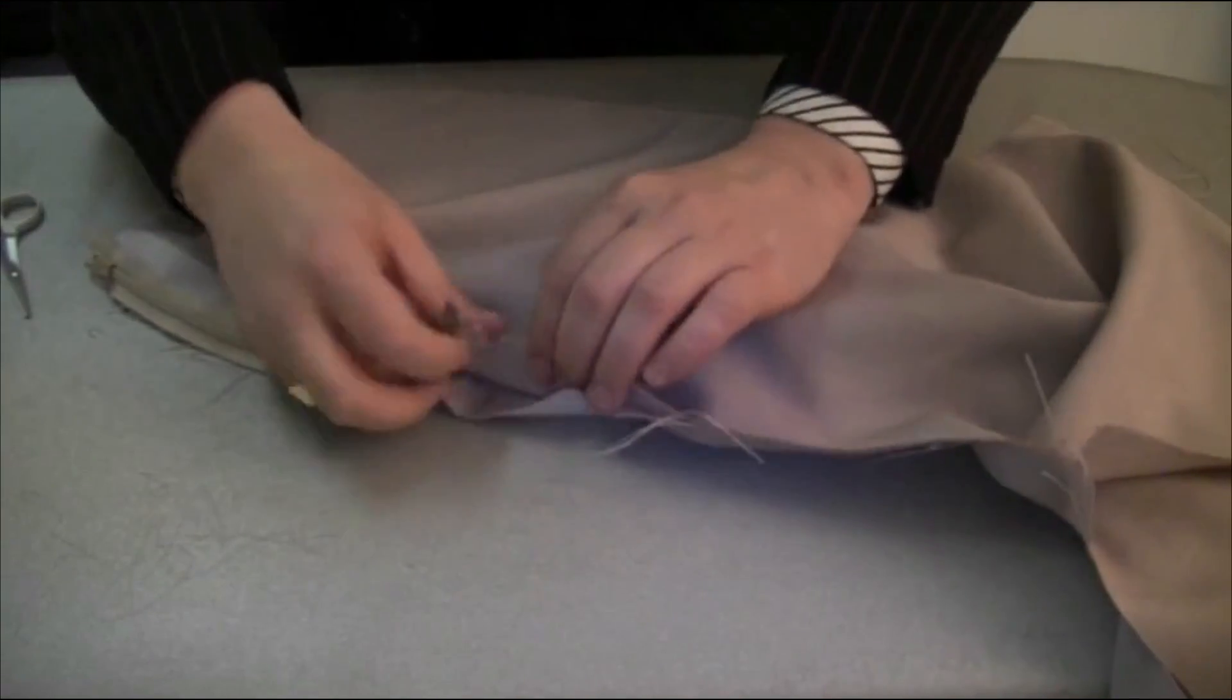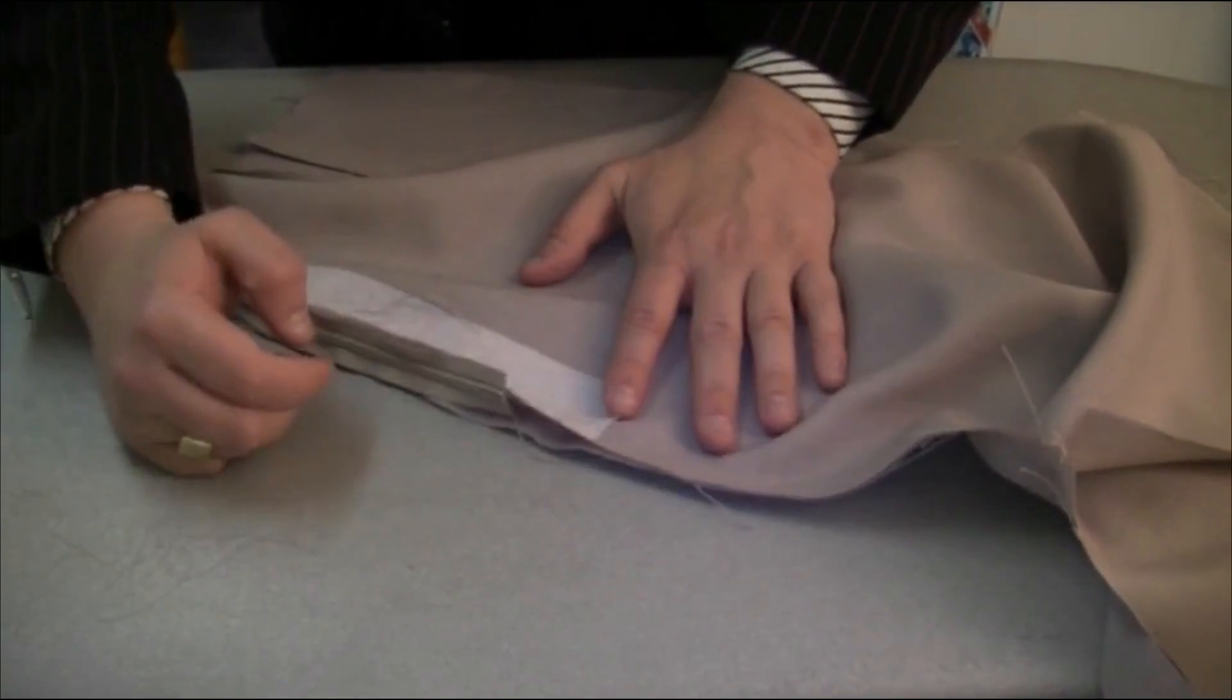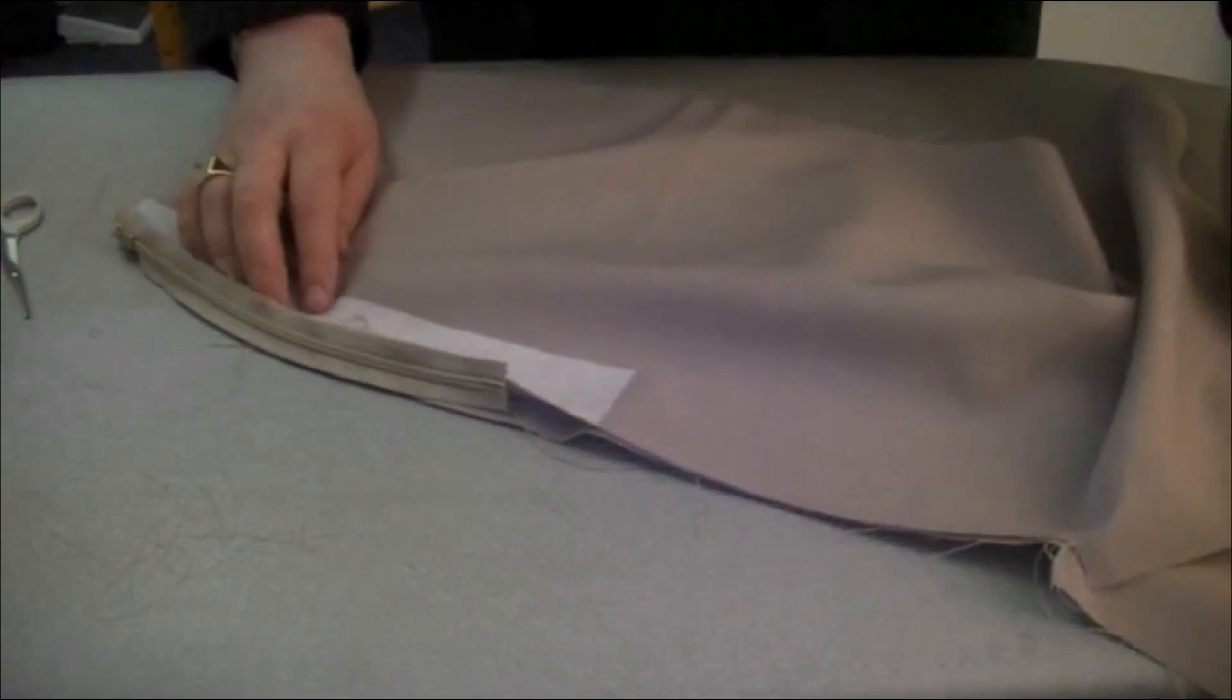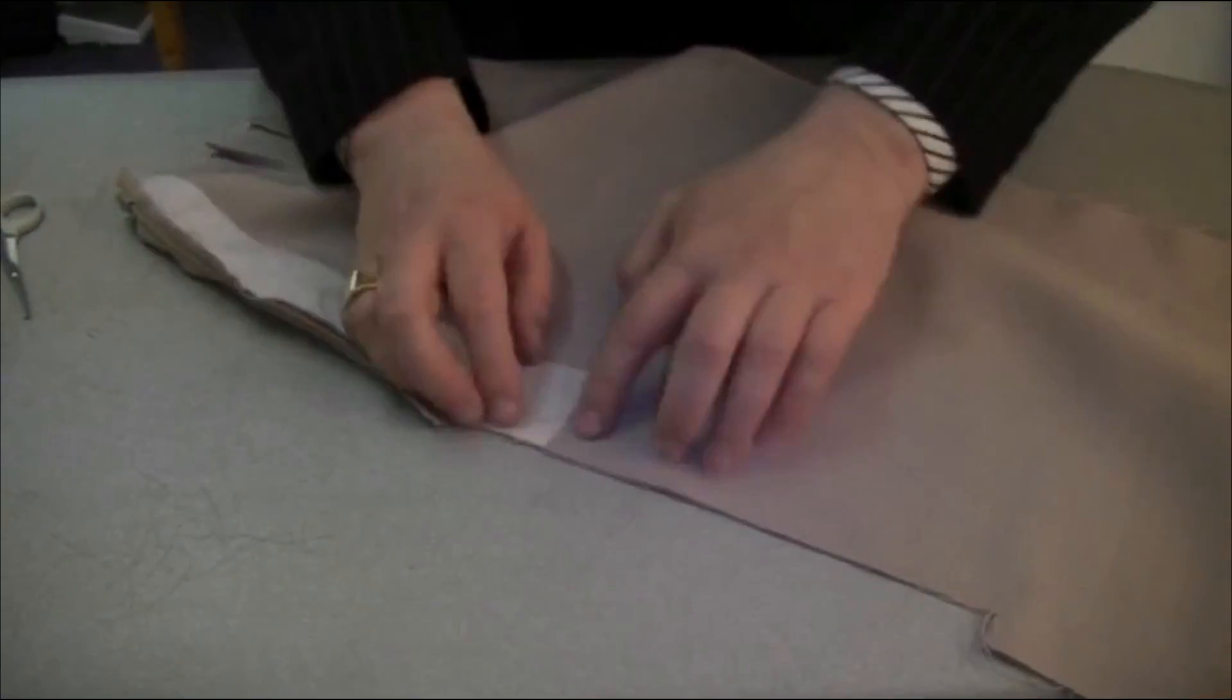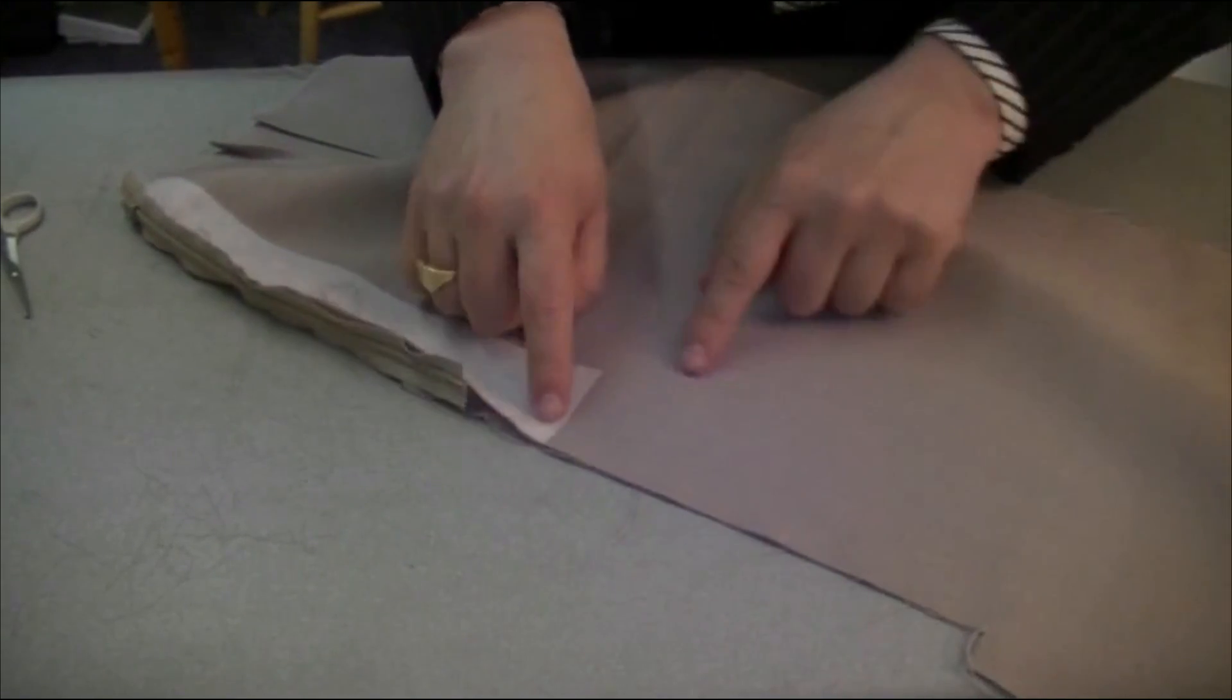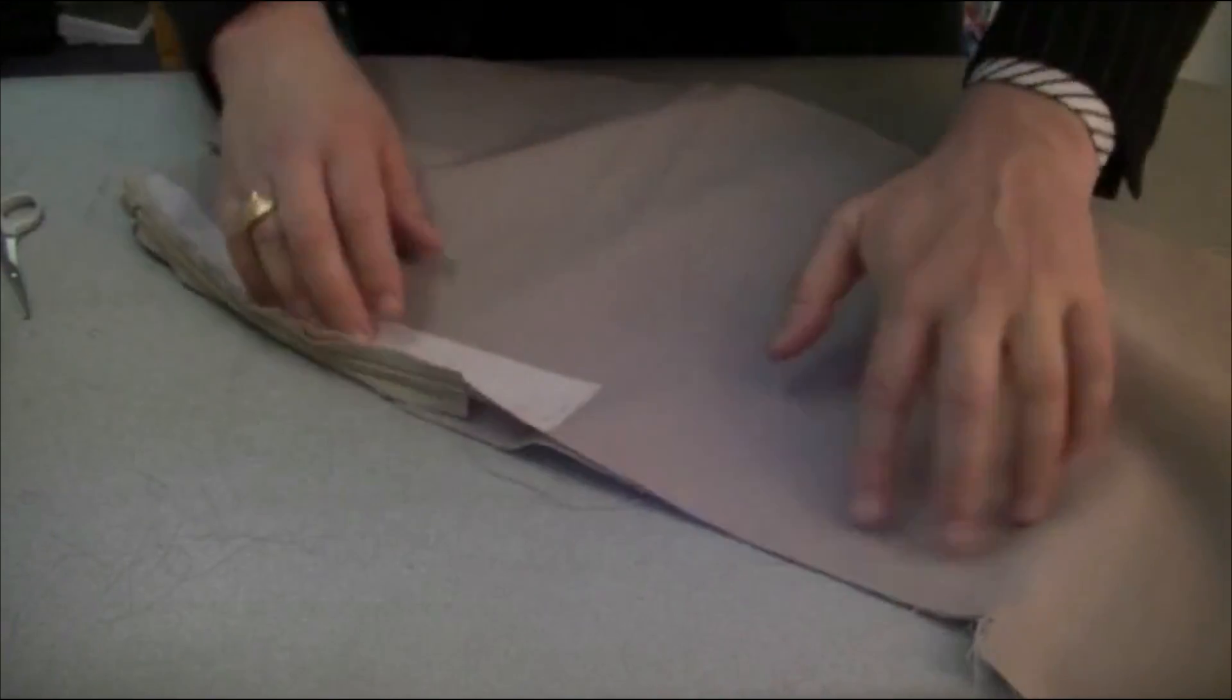Right, so when you do that, you can then, basically, your zip is loose, as you can see, it's loose from the edge. Now, the next part, what you need to do is where you stitch to originally, I mean, you should have a gap, like so, you know, you should have a gap.